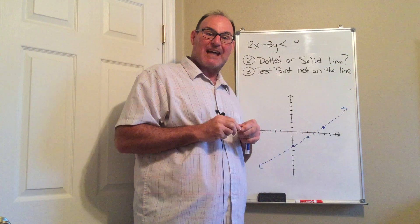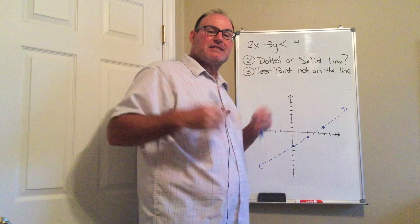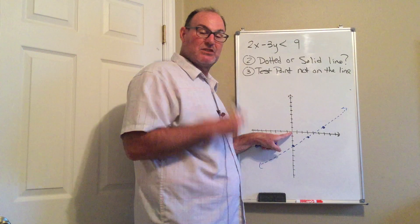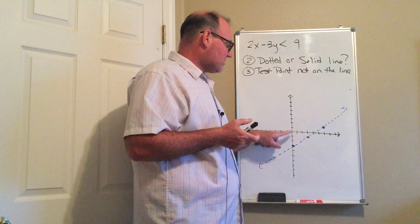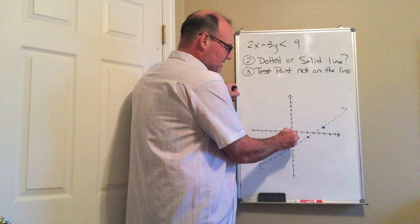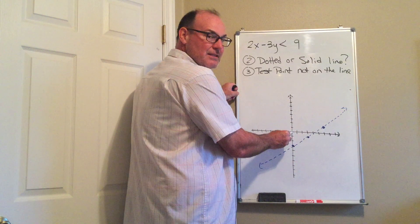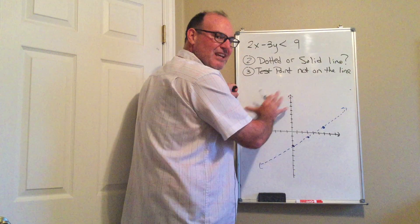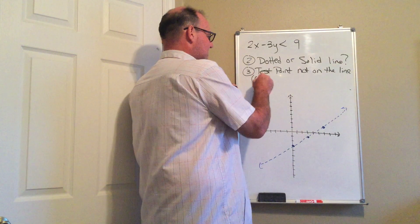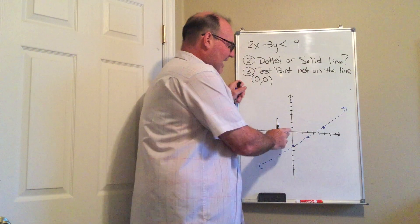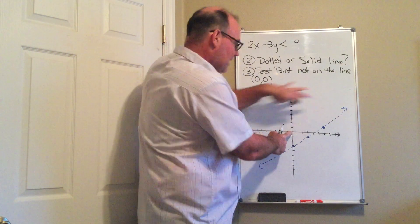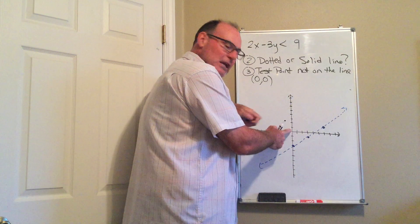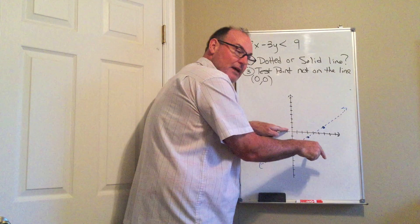You pick a test point that is not on the boundary. Because I like to multiply by 0, I usually pick my test point of (0, 0) when I'm able to. That test point right here is going to represent this whole side of the inequality. I'm going to test (0, 0). If I get a true statement, that means this side contains the solutions. If I get a false statement, that means the solutions are on the other side.